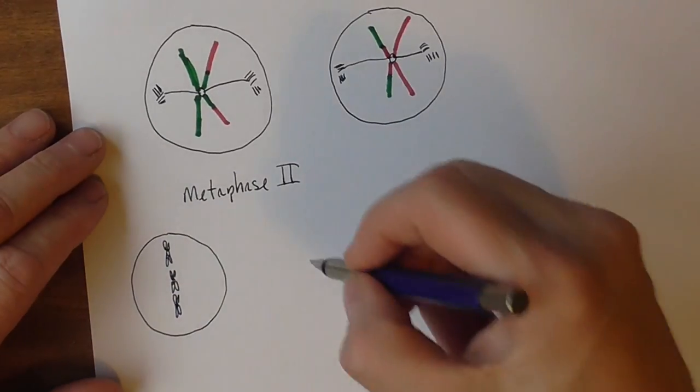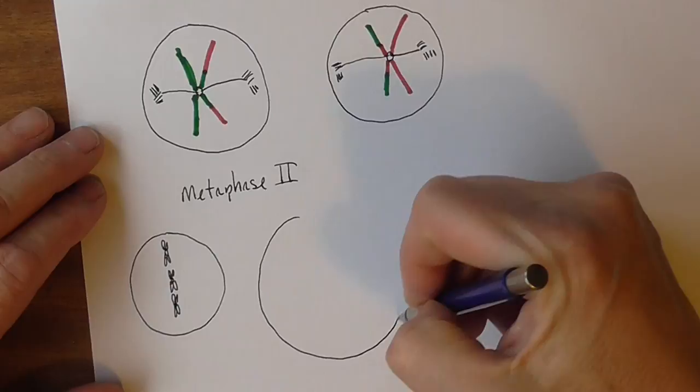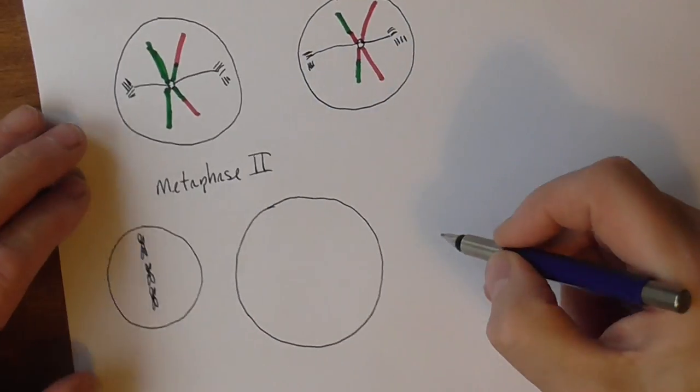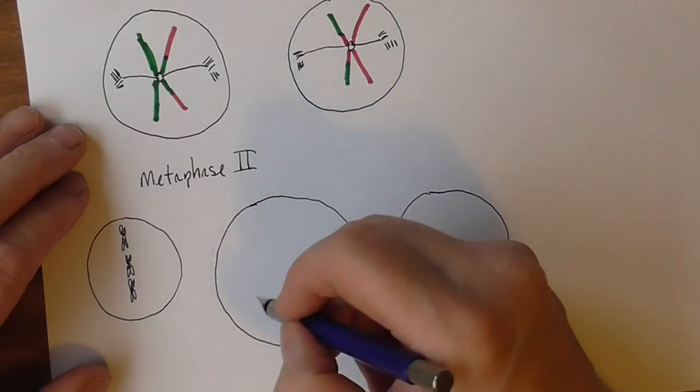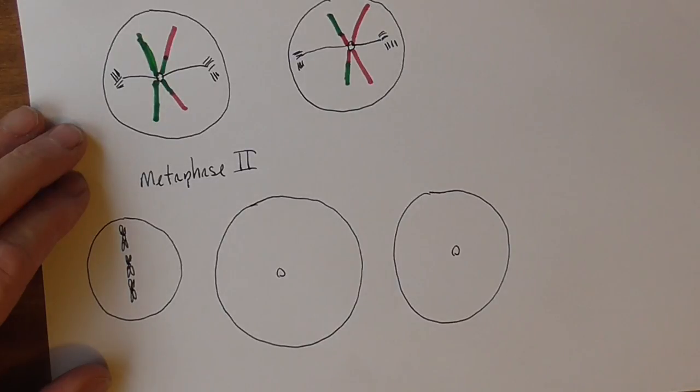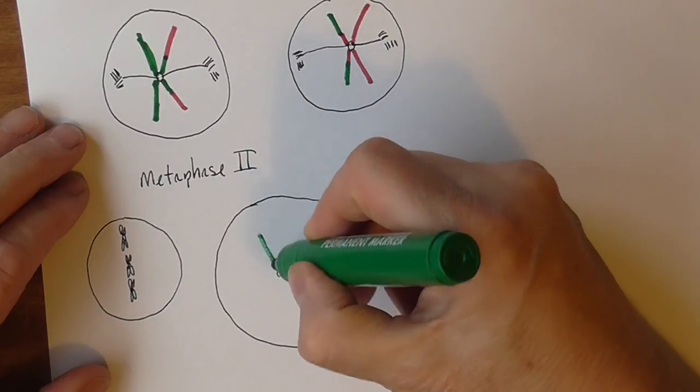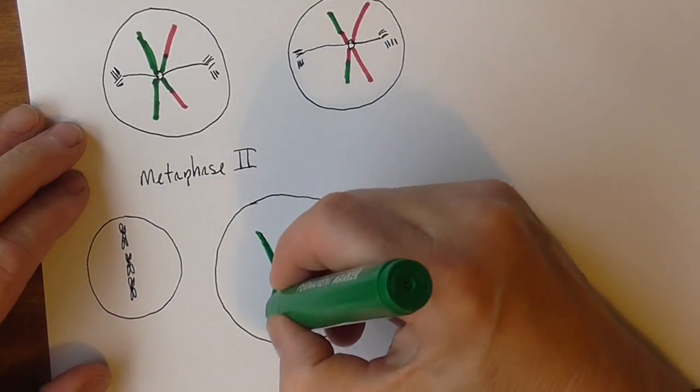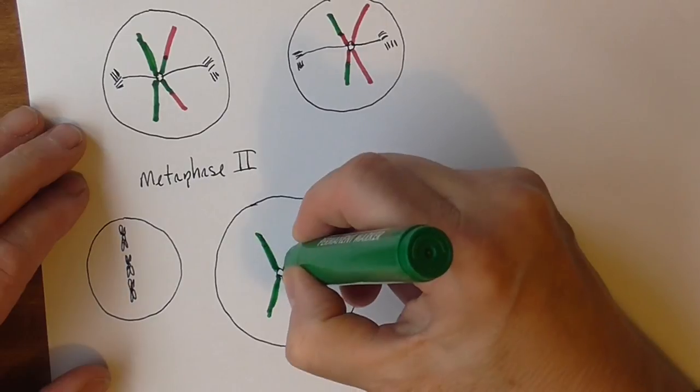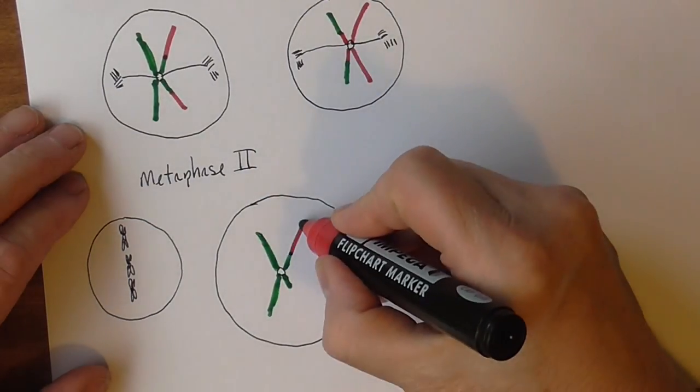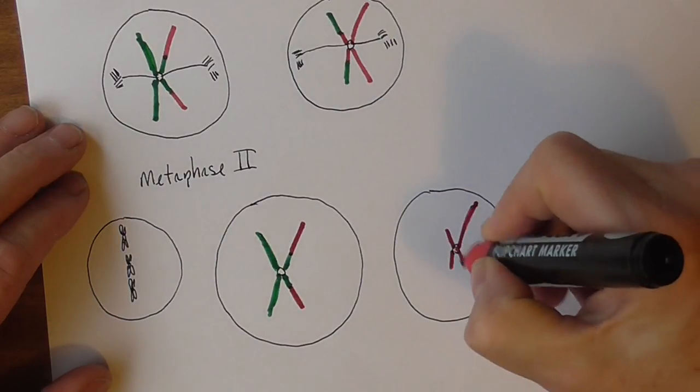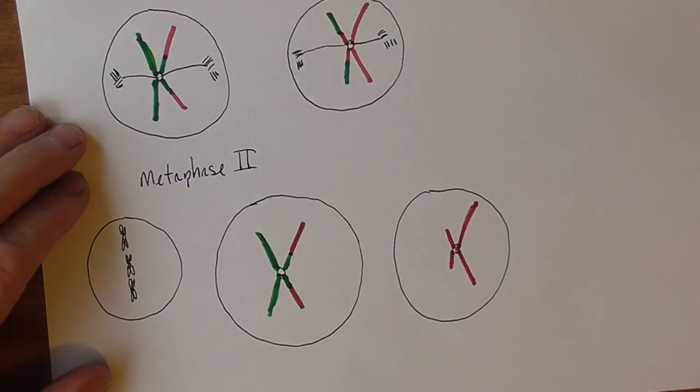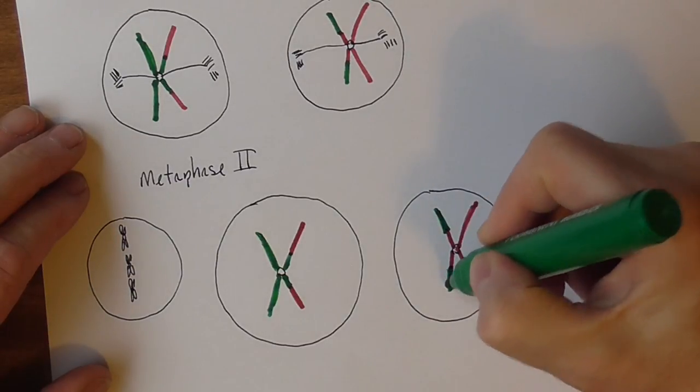And let's go back to the original single tetrad we were considering in each of the two cells, because it's now haploid remember. So here we have that one and that one, keeping to the same color coding. We have the tetrad there and in this one.